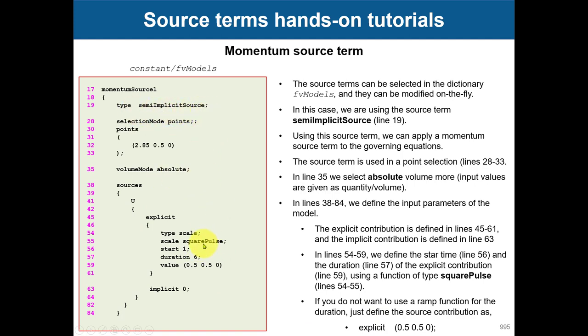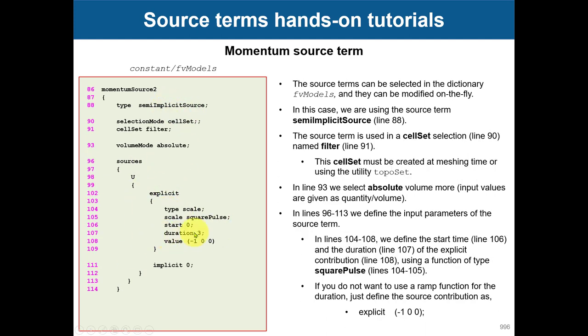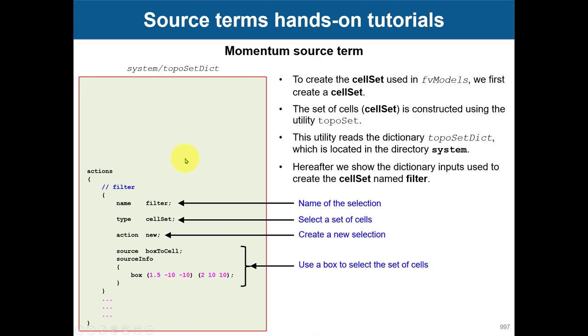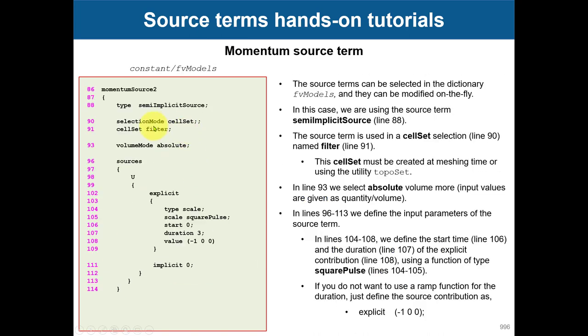Just to mention that this explicit semiImplicitSource has an explicit and implicit contribution that you are defining here, applied to this variable velocity. You are going to have different if you want to apply it to pressure or whatever. That's all. If you have different sources, these entries are going to be different.